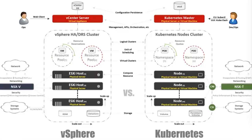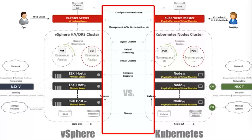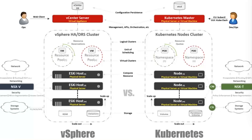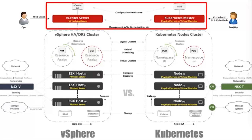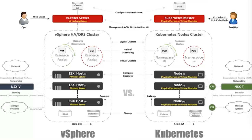On the left you've got a vSphere infrastructure, on the right a Kubernetes infrastructure. ESXi hosts on the left become Kubernetes nodes on the right — those nodes could be physical servers, virtual machines, or running in the public cloud. The different management units are shown in the middle: storage datastores versus volumes, compute resources, resource pools versus namespaces, and the atomic unit of scaling — the VM versus the pod.